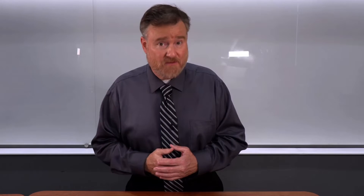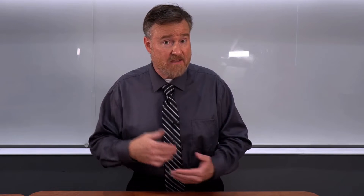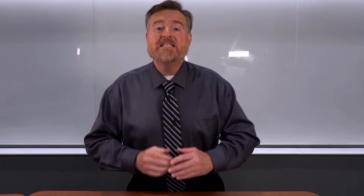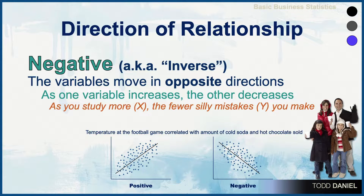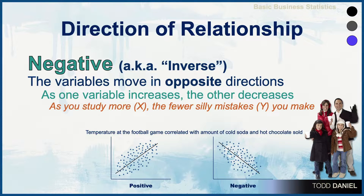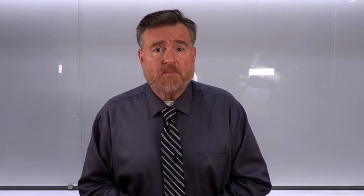There are three types of relationships: positive, negative, and none. A negative relationship, or inverse relationship, occurs when the variables move in opposite directions — as one variable increases, the other decreases. As temperature goes up, sales of hot chocolate decrease; as temperature goes down, sales of hot chocolate increase. Or, as you study more, you make fewer mistakes in your homework. This is a negative relationship between variables.